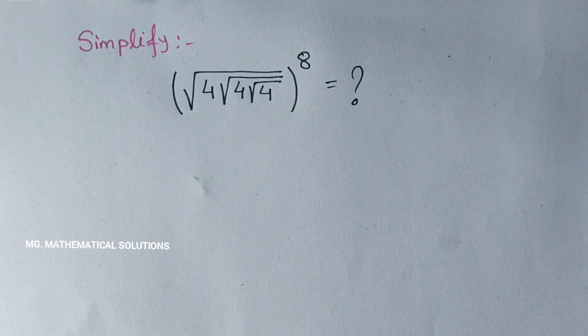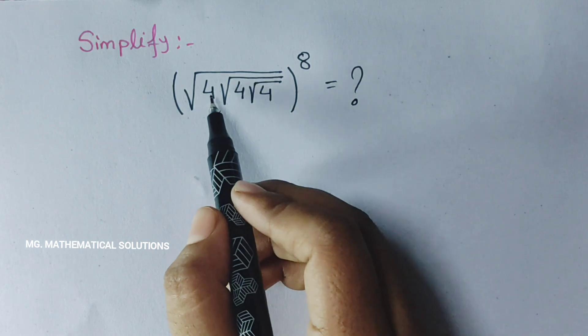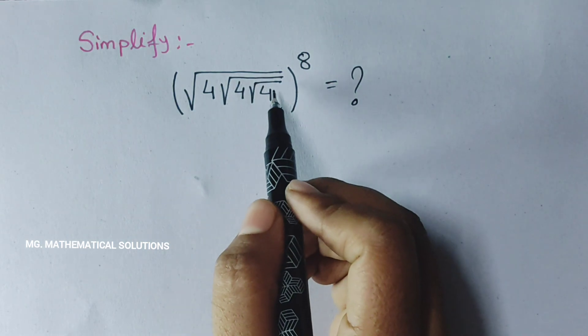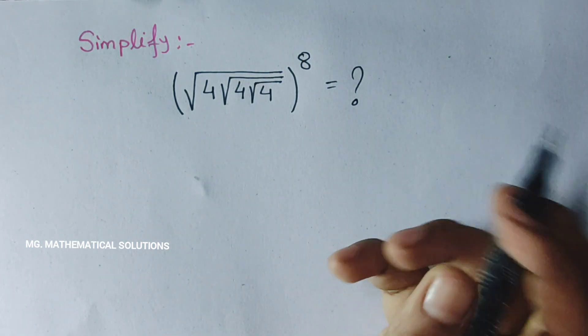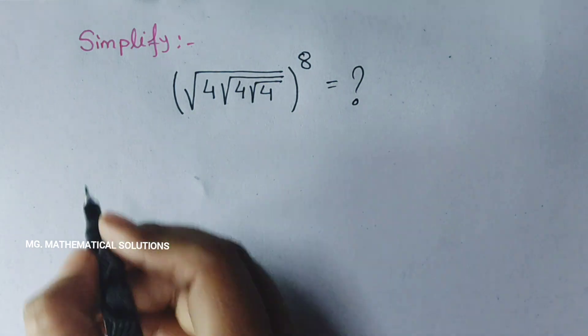Hello students, today I solve a nice square root problem: simplify root under 4, root under 4, root under 4, whole to the power 8. Let's see the solution.